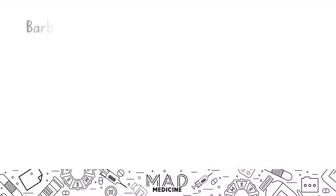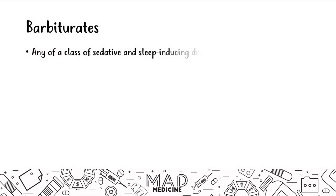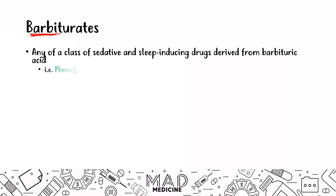Let's talk about barbiturates. Barbiturates are any class of sedative and sleep-inducing drugs that are derived from barbituric acid — that's why we have 'barbit' in the name. An example would be phenobarbital or pentobarbital. Any class of drugs that have the letters 'barbitol' or 'barbit' are going to be classified as barbiturates.